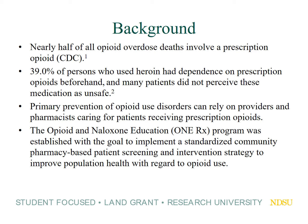We're well aware that many opioid overdose deaths started with a prescription opioid, including individuals who went on to have heroin dependence — many of them had an opioid prescription as the starting point. We also know that primary prevention of opioid use disorders can rely on providers and pharmacists who care for their patients receiving opioids, as a way of preventing them from starting down the pathway of opioid misuse. The 1Rx program was established with just this goal in mind, using a standardized community pharmacy-based patient screening approach to improve population health with regard to opioid use.